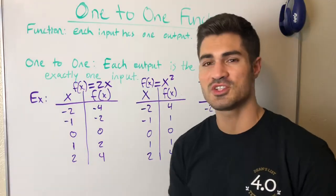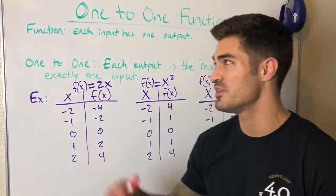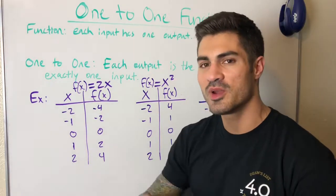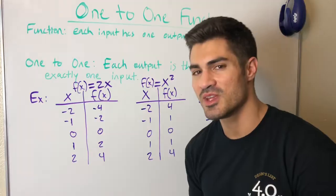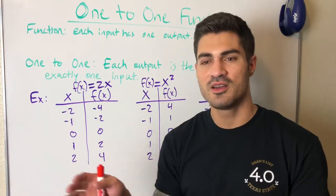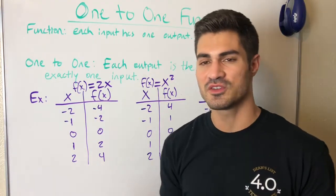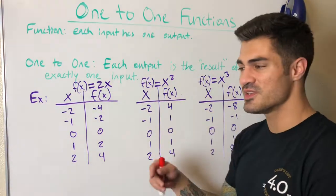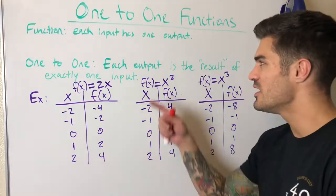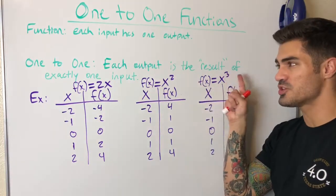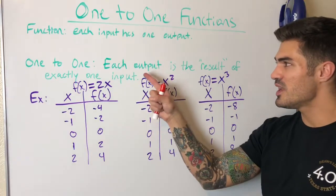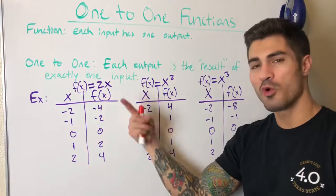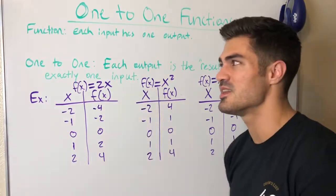One-to-one functions — we must remember the definition of a function, because all one-to-one functions are still functions. Each input has one output. We plug something in, we get something out. We can't plug something in and get two different things out — that's not a function. But with one-to-one functions, we do the same thing in reverse: each output is the result of exactly one input.